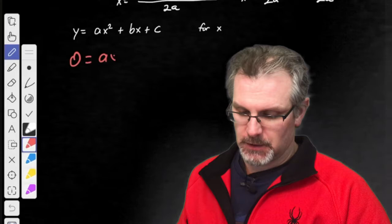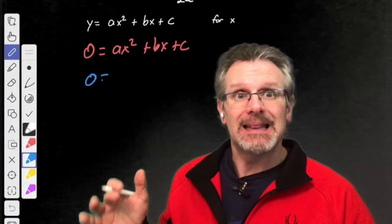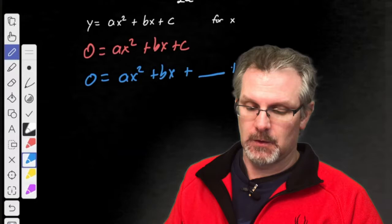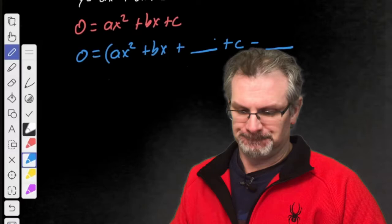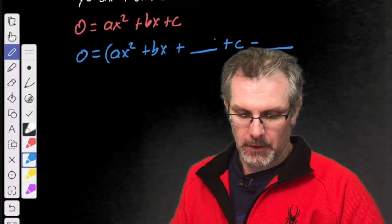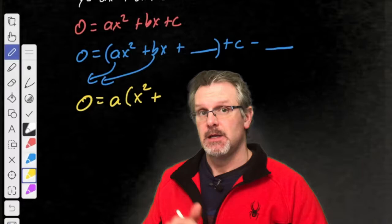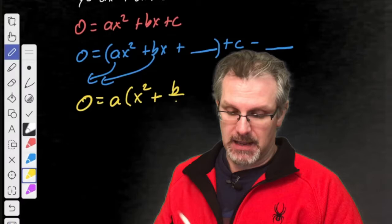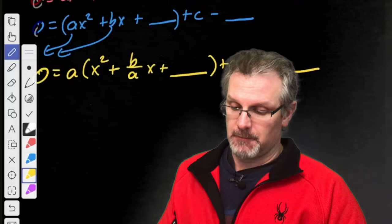We start by setting the expression equal to zero: ax squared plus bx plus c. Let's get it set up to look like completing the square: 0 equals ax squared plus bx plus a space, plus c minus that space. I want a to be one, so we're going to factor an a out. So 0 equals a on the outside, x squared plus b over a times x, plus the space, plus c minus a times the space.